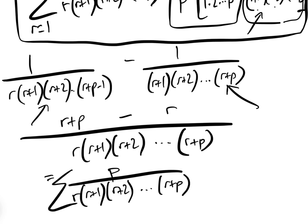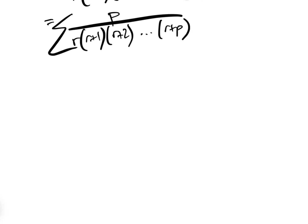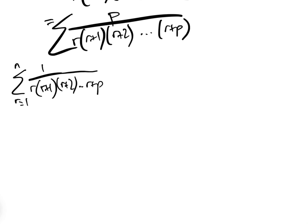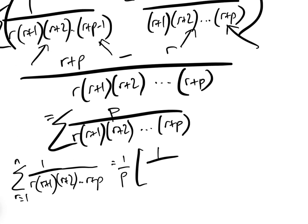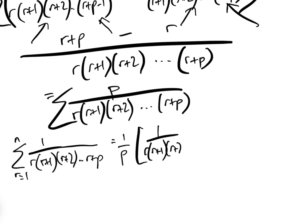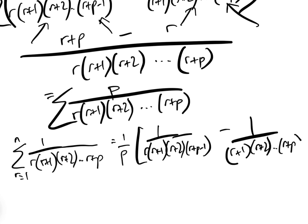So when we sum this, it's the same as summing that expression. The nice thing is that everything apart from the first and last terms cancels out. Basically, we want to sum 1 over r(r+1)(r+2)···(r+p) from r equals 1 to n. We know that equals 1/p times [1 over r(r+1)···(r+p−1) minus 1 over (r+1)(r+2)···(r+p)].